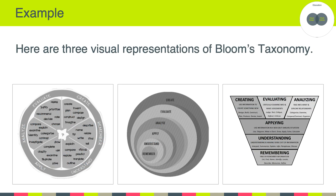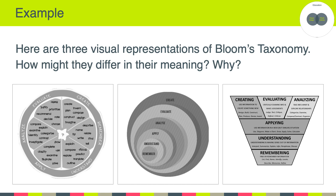Here are three visual representations of Bloom's taxonomy. You'll notice that the content of each of these representations is more or less the same; however, the structure or layout of that content, visually speaking, is quite different. A question to consider: how might these visual representations differ in terms of their meaning? If you were to give these representations to people, what do you think they would learn about Bloom's taxonomy? Does the visual representation of this information change what people might take away from each design?